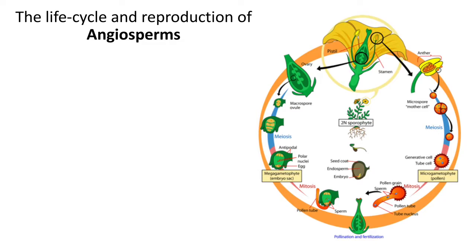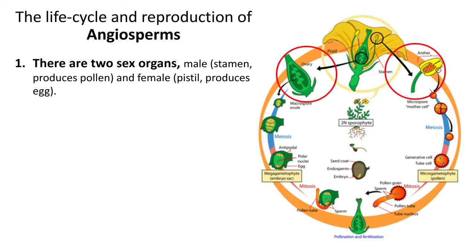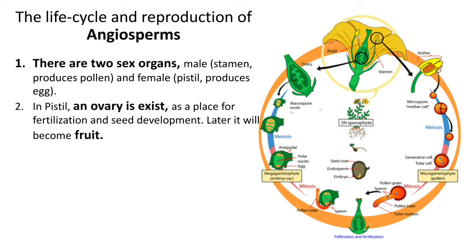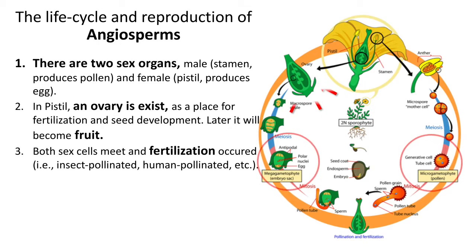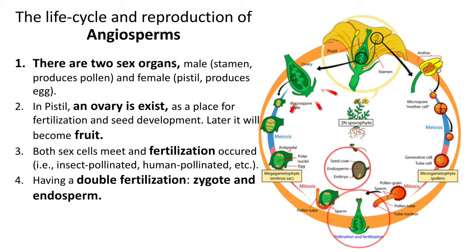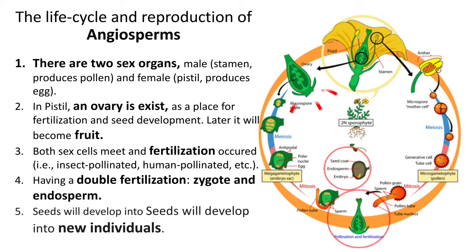Now moving on to the life cycle and reproduction of angiosperms. The diagram on your screen describes the angiosperm life cycle and reproduction mechanism. There are two sex organs: male, known as the stamen, which produces pollen; and female, known as the pistil, which produces an egg. In the pistil, an ovary serves as the place for fertilization and seed development, and later becomes a fruit. Both sex cells meet, fertilization occurs, and angiosperms undergo double fertilization which produces a zygote and endosperm. Finally, the seed develops into a new individual plant.